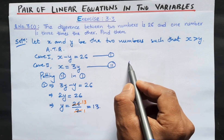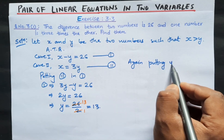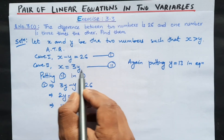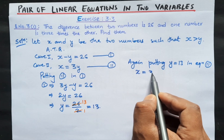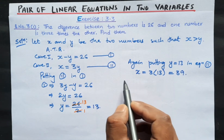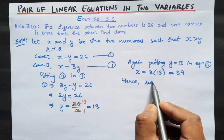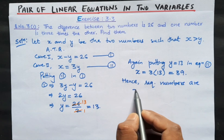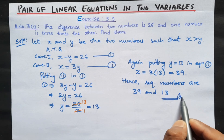Now putting y equal to 13 into equation number 2: x equals 3 times 13, so x equals 39. Hence, the required numbers are x equals 39 and y equals 13. These are our answers.